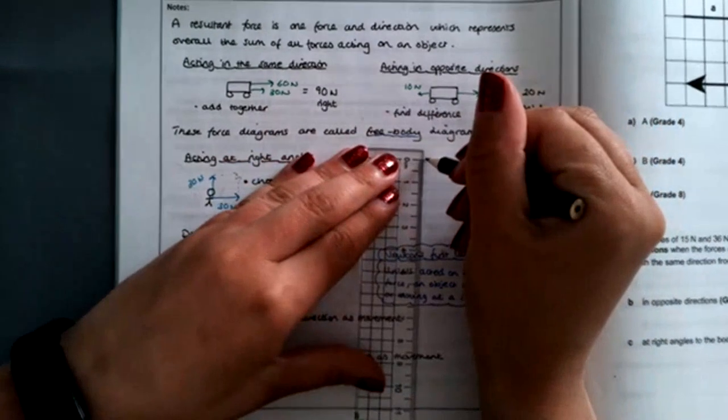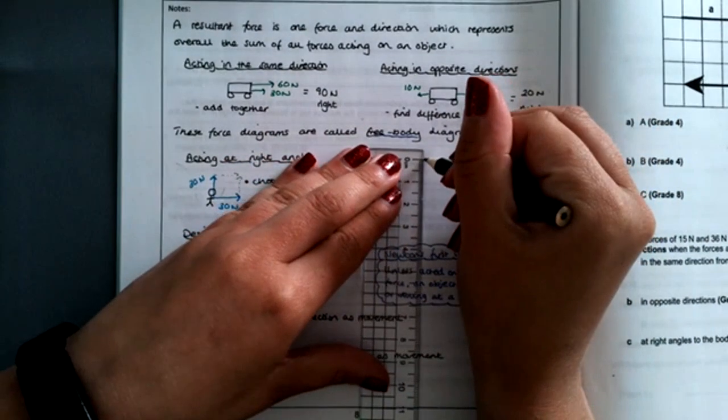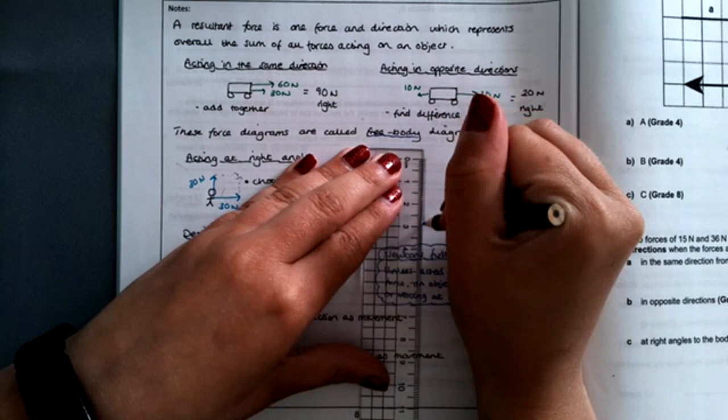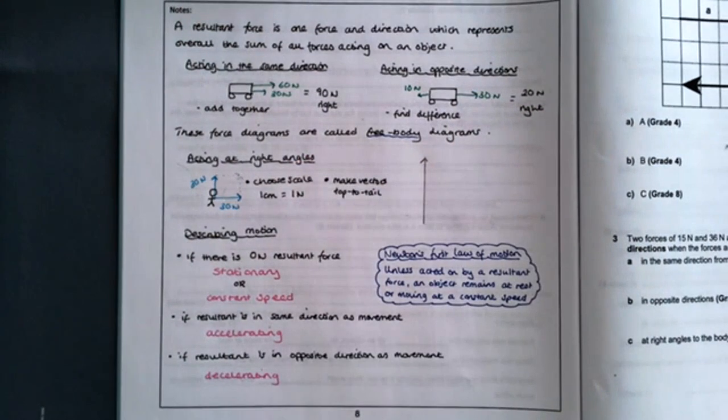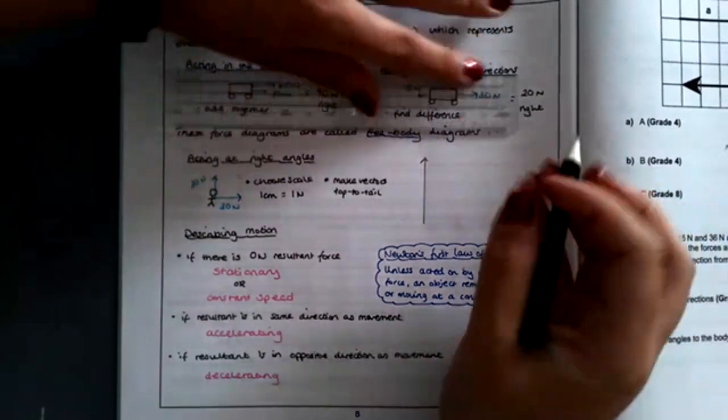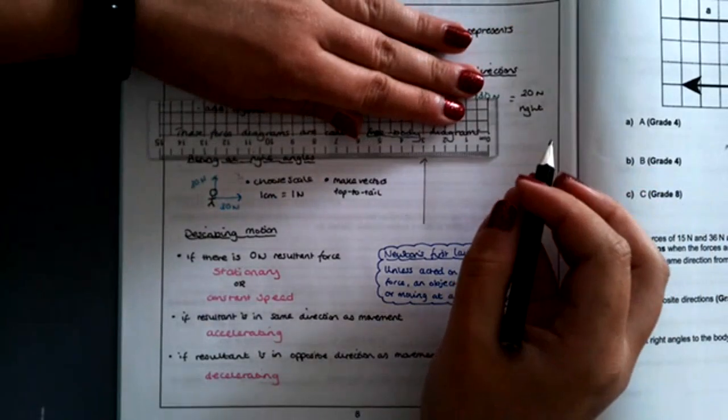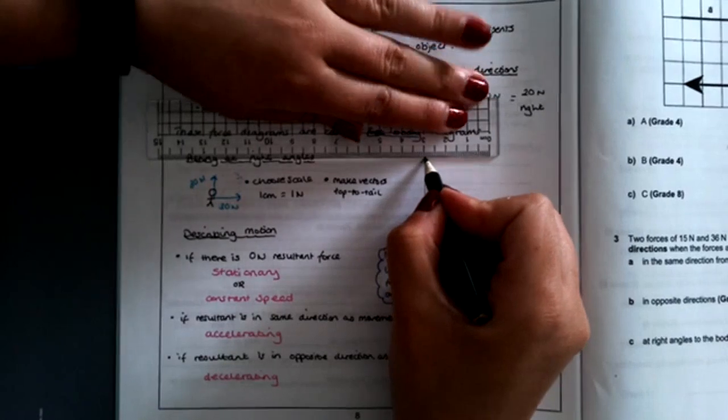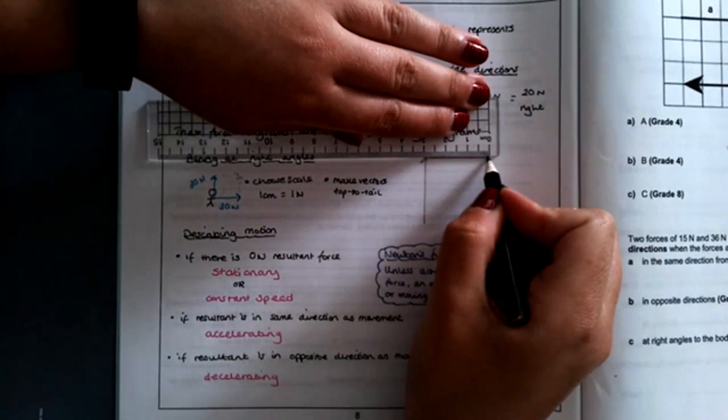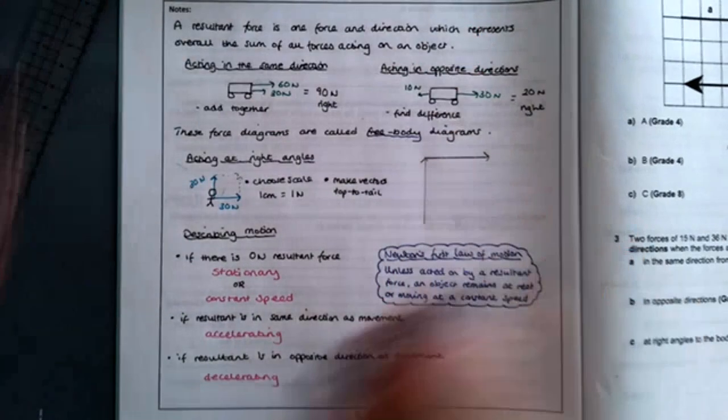Three centimeters is how long I need my vertical arrow to be, because each centimeter is representing a newton. I'm now going to draw my horizontal vector from the top of the vertical one, connecting to the tail of this one.